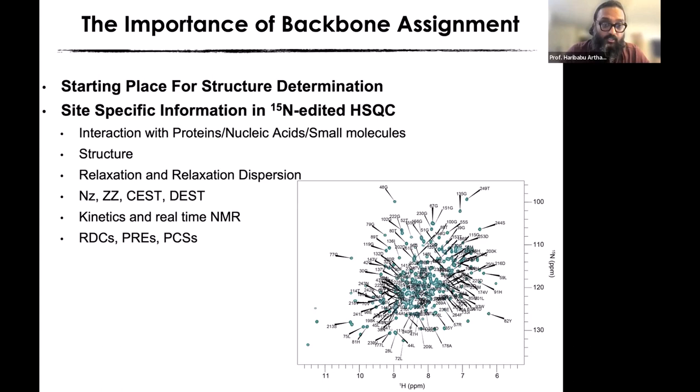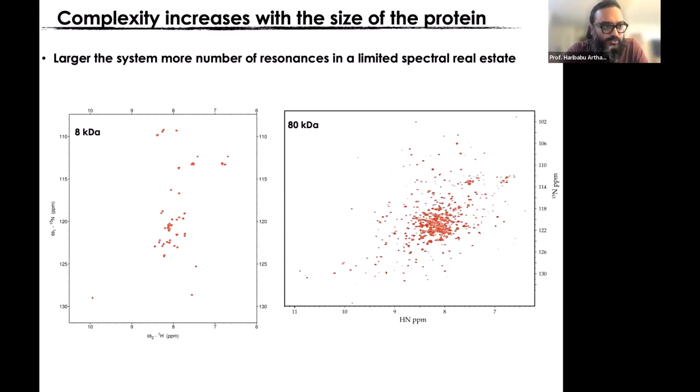How do we correlate each dot to an amino acid in the primary sequence? That's typically done by a set of experiments called the triple resonance experiments. I'll briefly touch upon that. The problem when we go to larger systems: here I show you an HSQC spectrum of two proteins — one is an 8 kilodalton protein on your left, and the other is an 80 kilodalton protein.